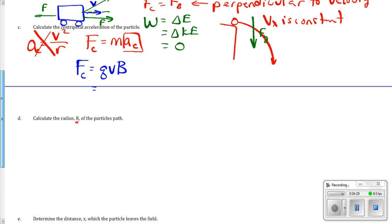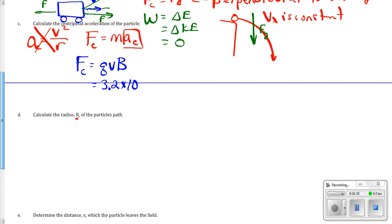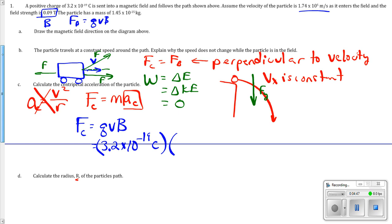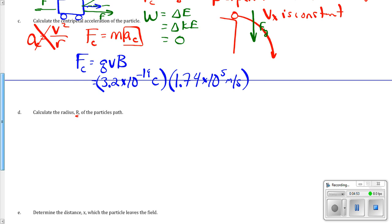So, in this case, the centripetal force is the magnetic force, which is 3.2 times 10 to the negative 19th coulombs times the velocity, 1.74 times 10 to the 5th meters per second, times the strength of the B field, 0.09 teslas. That number comes out to be something.